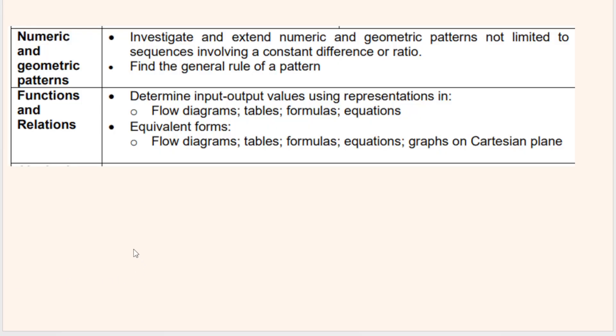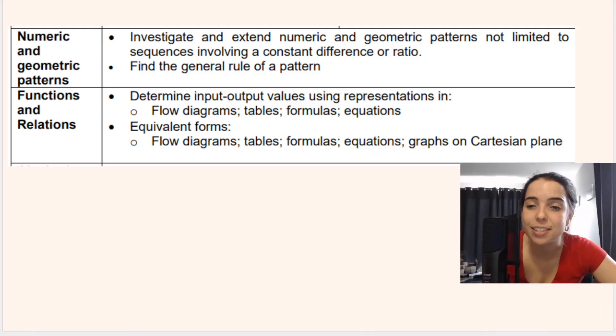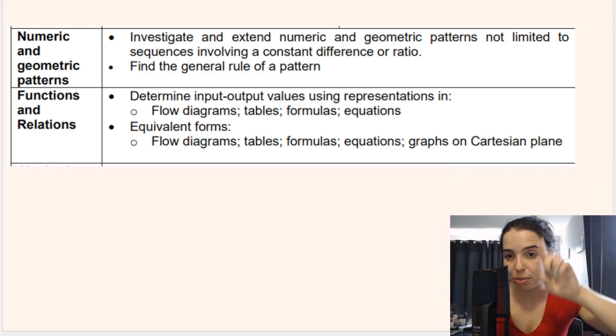Then our next topic is numeric and geometric patterns. So number patterns and linked to that, that's why I put them together, are the functions and relationships. So knowing how to find the general rule of a pattern, tn equals 2n plus 1, how to get that rule, how to know if you're dealing with a linear pattern with a constant difference or a pattern with a constant ratio, working with tables, flow diagrams, all of that.